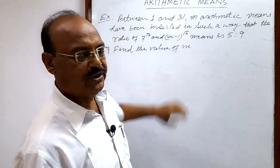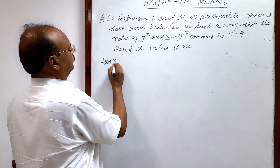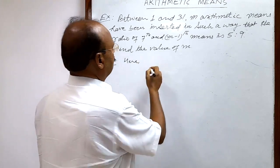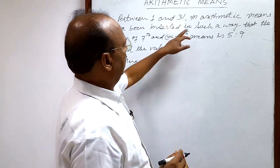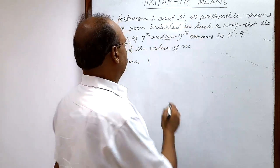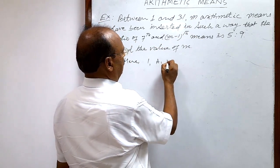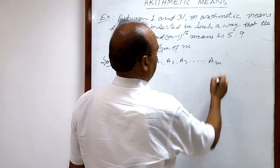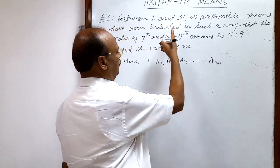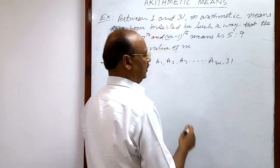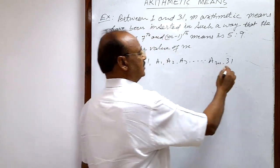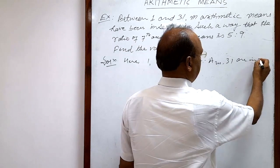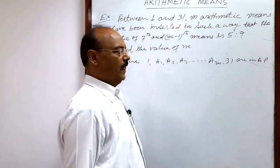Understood the question? So, what is given? There are m arithmetic means — let us say a₁, a₂, a₃, ... aₘ — these are m arithmetic means between the two given numbers 1 and 31. So this sequence, these numbers, are in an AP.